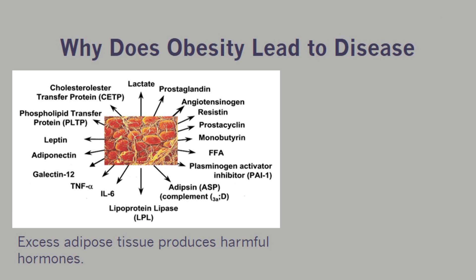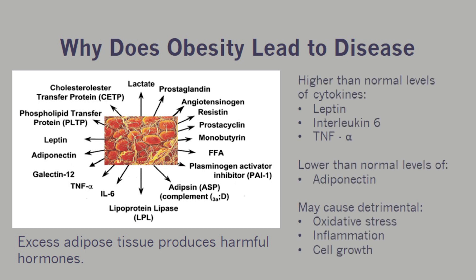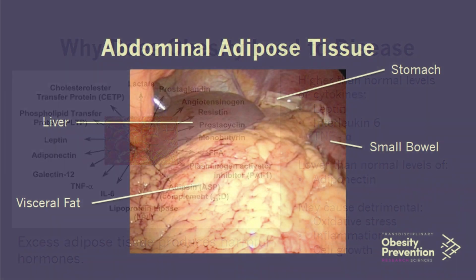The reason that excess body fat leads to disease is under investigation. One major finding, realized about 20 years ago, is that adipose tissue produces a number of hormones and other molecules that are involved in the immune system, called cytokines. When adipose tissue is in excess, the levels of harmful hormones and cytokines are increased, and the levels of beneficial hormones are decreased. The normal function of cytokines is to attack foreign invaders in the body, but when they're elevated in the obese state, they attack the body itself. Higher than normal levels of cytokines such as leptin, interleukin-6, and tumor necrosis factor alpha, and lower than normal levels of factors such as adiponectin, can influence processes such as oxidative stress, inflammation, and cell growth in ways that can be detrimental.